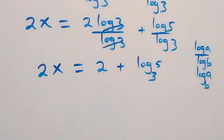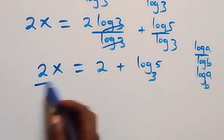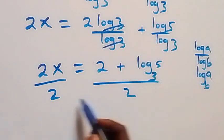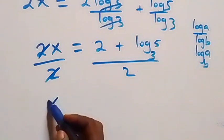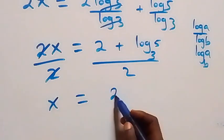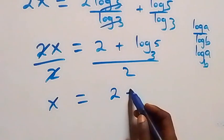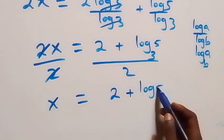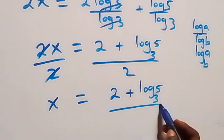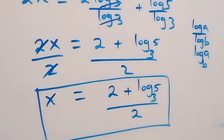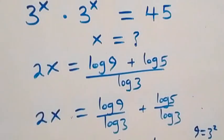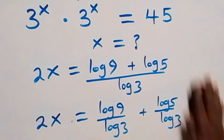Now we divide both sides by 2. Dividing here by 2 and also this side by 2, the 2s cancel on the left and we have x equals 2 plus log 5 base 3, all over 2. So here we have the value of x in this given problem.